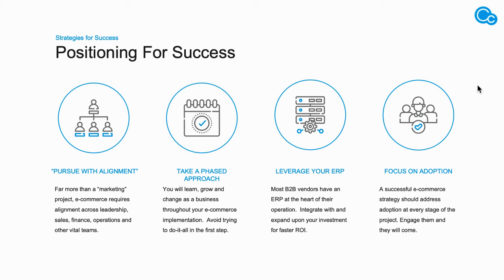What you're seeing on screen here are strategies for success. While designed specifically for SimCloud, these really fit across the board when thinking through customer-facing solutions. The first is pursuing the project with alignment. As it relates to e-commerce, you want your organization to view the e-commerce asset as more than just a website — more than just an additional way to do business. You want alignment across your sales, finance, and leadership teams, even operationally, where everybody views the site as a key value-add and a key way to do business with customers.